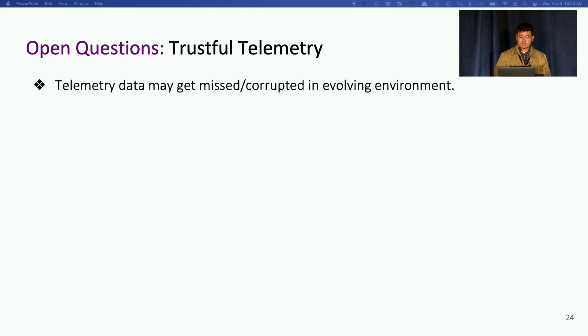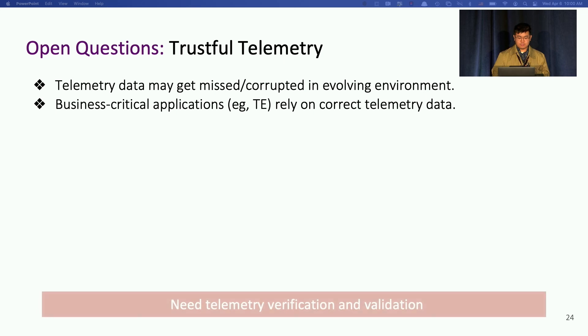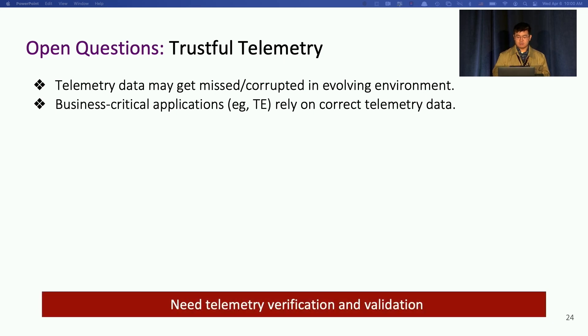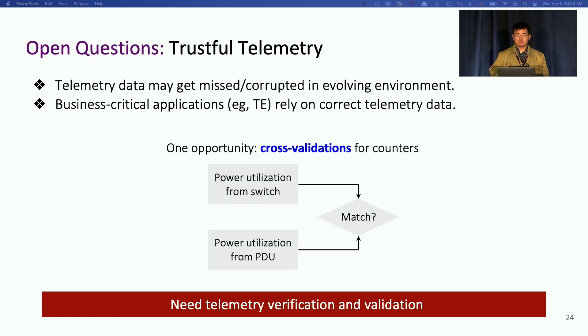So another question we have is how to build trust for telemetry. Given that telemetry data may get missed or corrupted in the evolving environment, but many business-critical management applications like traffic engineering, they rely on the correctness and accuracy of telemetry data. To this end, we think there's a strong need of telemetry verification or validation to guarantee the telemetry data is trustful. So one opportunity we are thinking of might be doing cross-validation for time-series counters. For example, the power utilization counter could come from both switches and the power distribution units. Can we utilize this redundancy to cross-check the correctness of collected data? So in this example, the telemetry verification will involve some kind of quantitative comparison over multiple time-series counters.